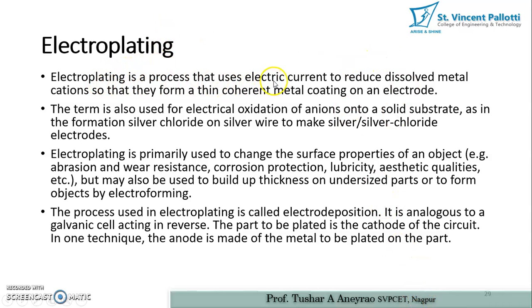Electroplating uses a very small amount of electric current, around 12 to 24 volts, to reduce dissolved metal cations. Cations are those which are part of the cathode. We dissolve those cations and then deposit them on the anode. That is why this electroplating process is also termed as anodizing method.